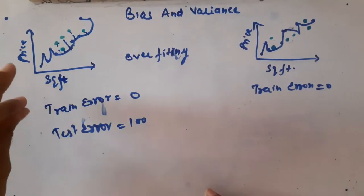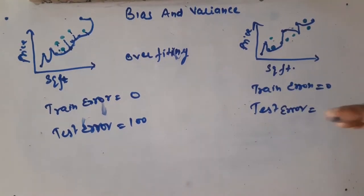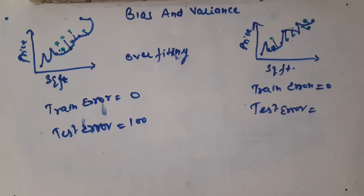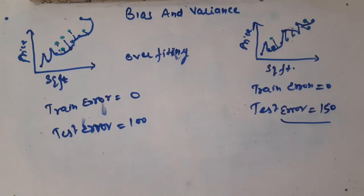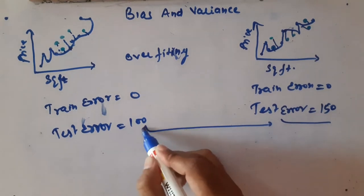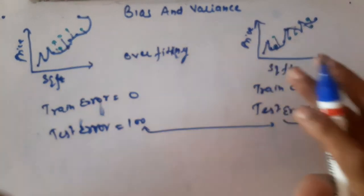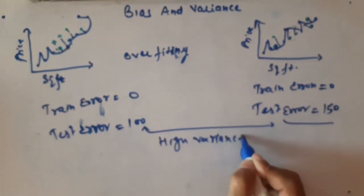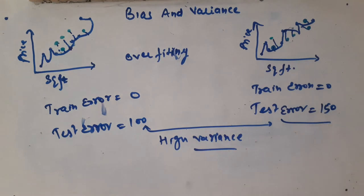The same way, since the second data scientist made the same mistake, the test error for that case comes out to around 150. You can see there is high variation among the test errors — 100 versus 150 — based on which training data points were chosen by the two data scientists. This is the case of high variance: there is high variation among the test errors.